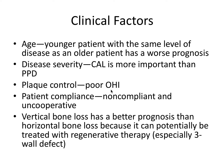Plaque control is important; poor oral hygiene makes a big difference compared to somebody with excellent hygiene who removes all their plaque. This goes along with patient compliance — a non-compliant, uncooperative patient will generally have a worse prognosis than somebody who is compliant and cooperative. Vertical bone loss has a better prognosis than horizontal bone loss because it can potentially be treated with regenerative therapy, especially the three-wall defect. A three-wall infrabony defect — called a trough — is the easiest to heal with regenerative therapy because it has the most walls of natural bone to supply bone cells and get the graft to take.